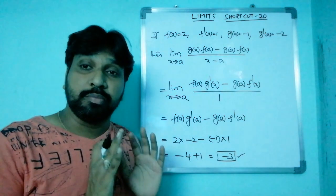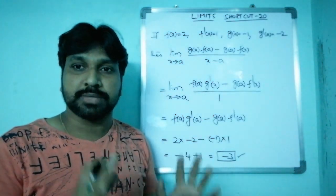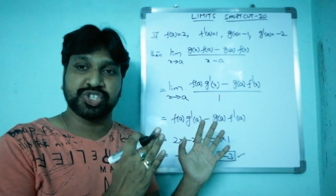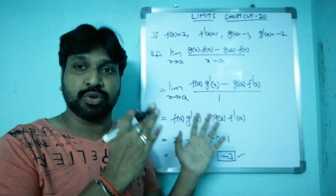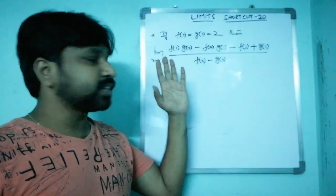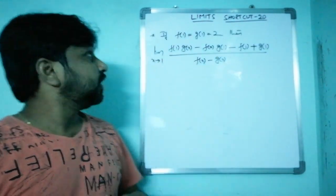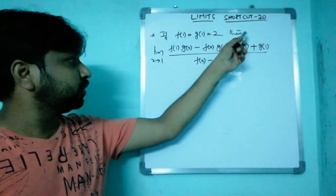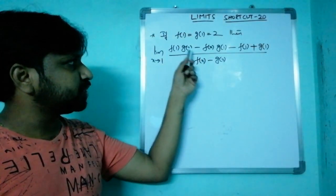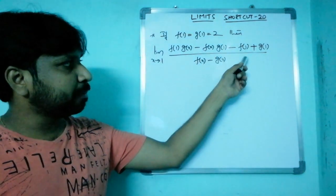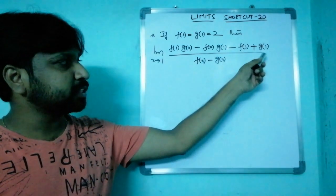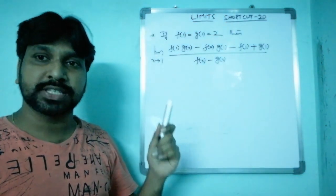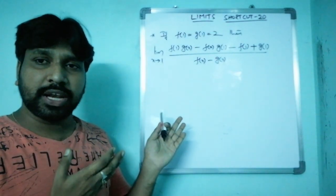This is a very important area and I want to discuss multiple examples. Coming to the second example: if f(1) = g(1) = 2, find the limit as x tends to 1 of [f(1)·g(x) - f(x)·g(1) - f(1) + g(1)] / [f(x) - g(x)].